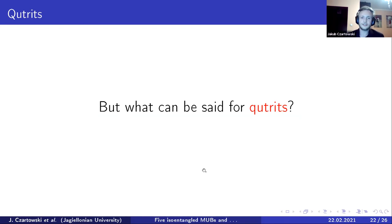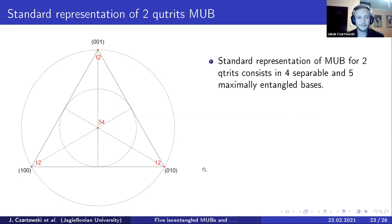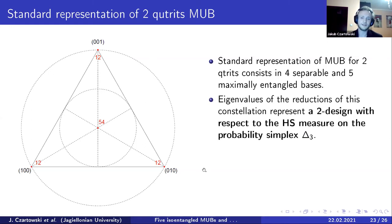So what can we actually say from this work about dimension three? To be honest, not really much. First of all, just to know what are the MUBs for two qutrits, they consist in four separable bases and five maximally entangled bases. And this is well visible within the triangle of eigenvalues. These are distributed in a way to be equally distributed over the whole simplex. And the important property of this configuration is that it provides a two-design over the probability simplex for three probabilities.